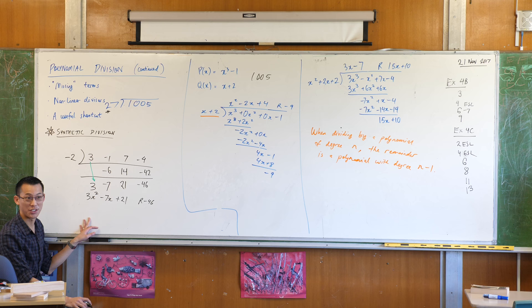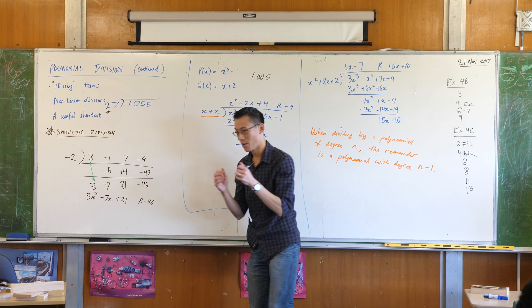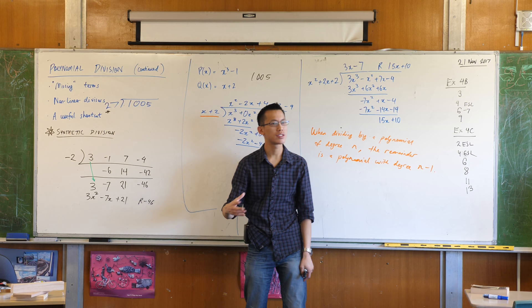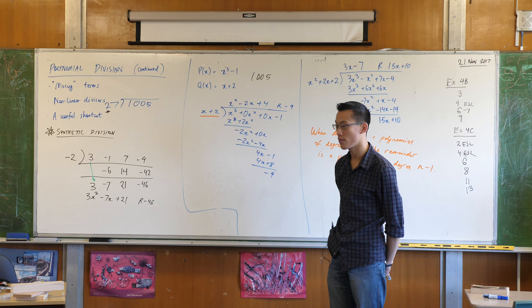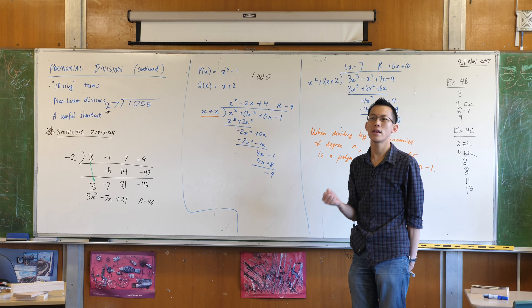That was quick, right? I even actually explained it to you. I was talking through it, and it was still faster, dramatically faster, OK? So if you have a look carefully, have a look at these numbers here. See these numbers that we've written down? Do you notice that every single one of those numbers is in your original working, right? Do you recognize the negative 7, the 14, the negative 46? They're all there. It's the same thing. We're doing the same thing, OK?